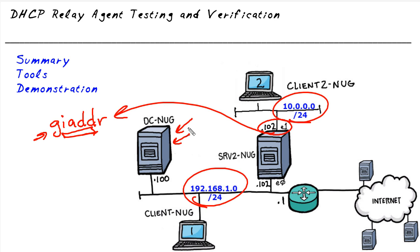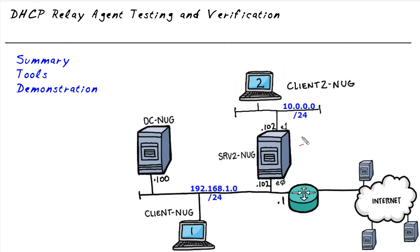Now that we know that, I think it might be handy to do some packet captures as one of our tools. That way, as you do the lab, you can actually prove and see what's happening with a protocol analyzer. I've got Wireshark installed on both DC-NUG and on Server 2. Let's capture the Ethernet 1 interface traffic on Server 2, and we'll also capture the traffic on DC-NUG's only interface.